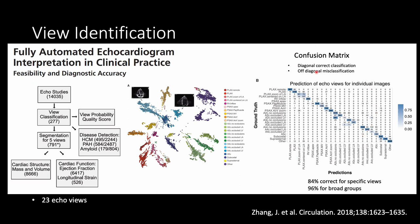You'll see confusion matrices frequently in these papers. The ground truth — what the image really shows, usually labeled manually — is compared against the computer's prediction. Things along the diagonal mean the prediction matches the ground truth; anything off the diagonal indicates misclassification. This group tried to identify four different echocardiographic views: two chamber, four chamber, three chamber, etc. They showed 84% accuracy for specific views and 96% for broad group views, which is very good.